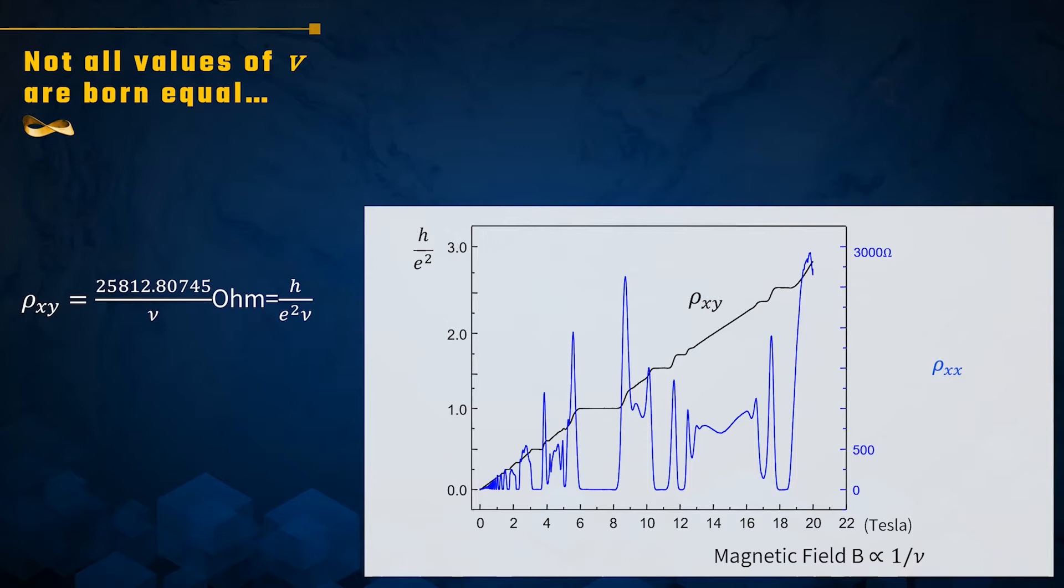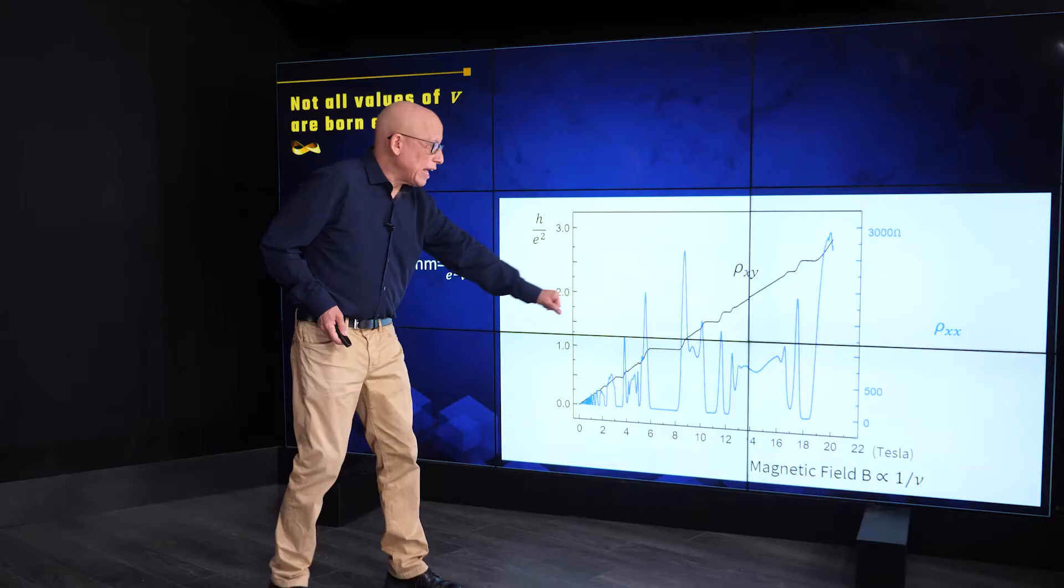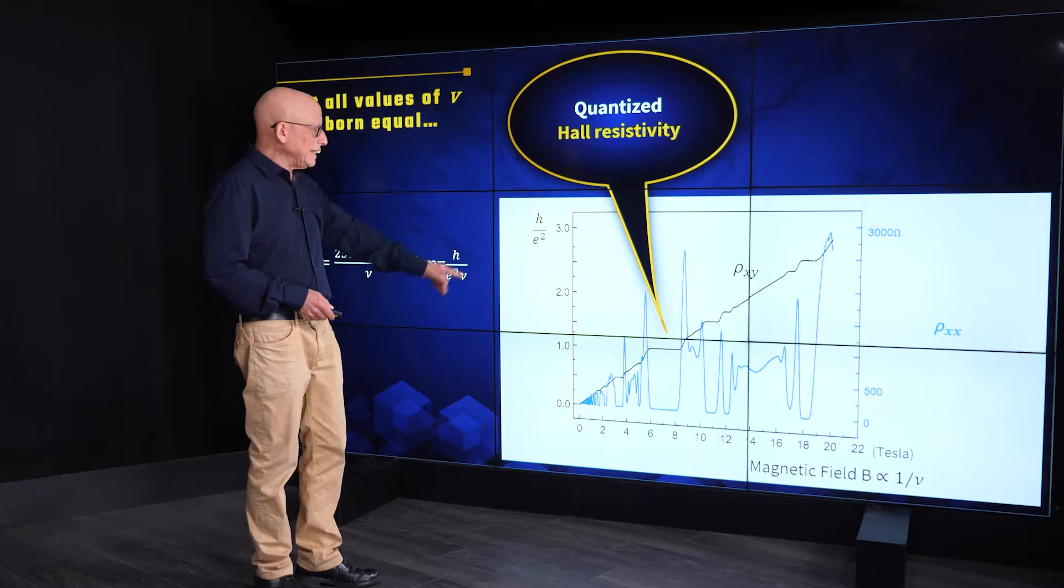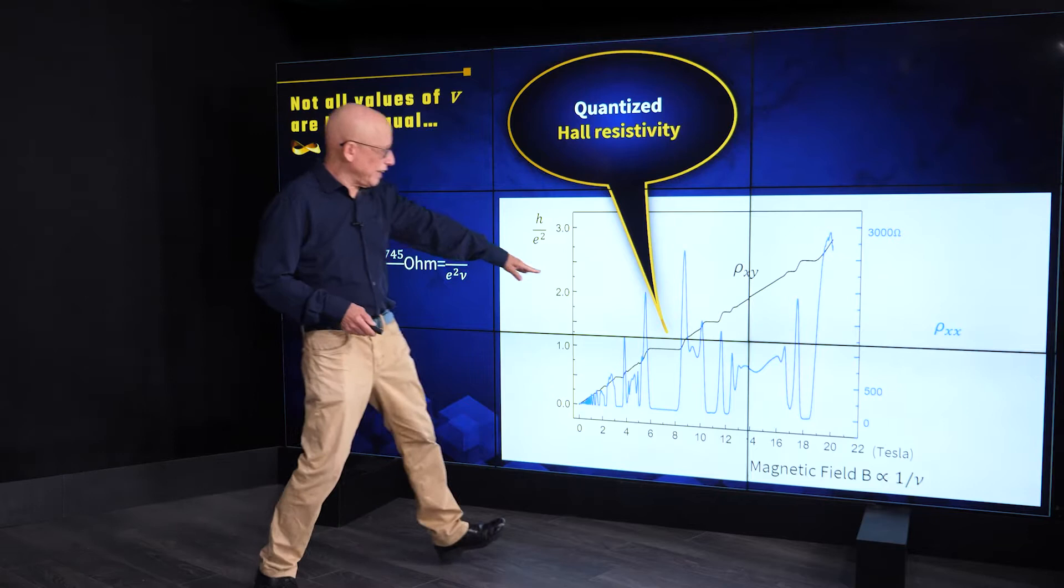So here is the experiment. We see in black rho xy in units of h over e squared as a function of magnetic field or 1 over nu. And what do we see? We expected a linear relation, a straight line.